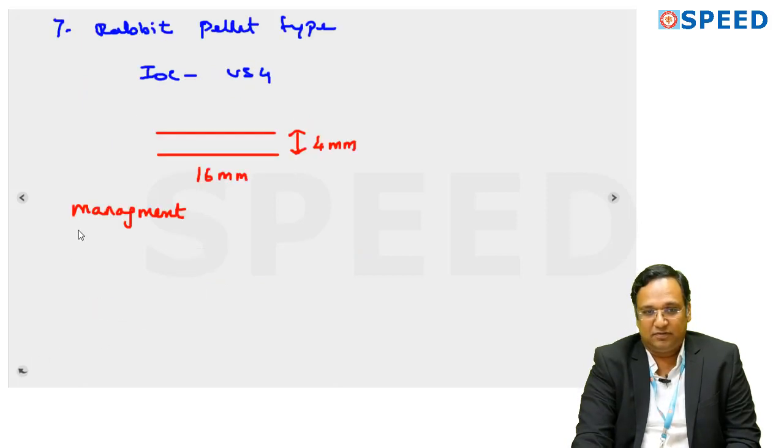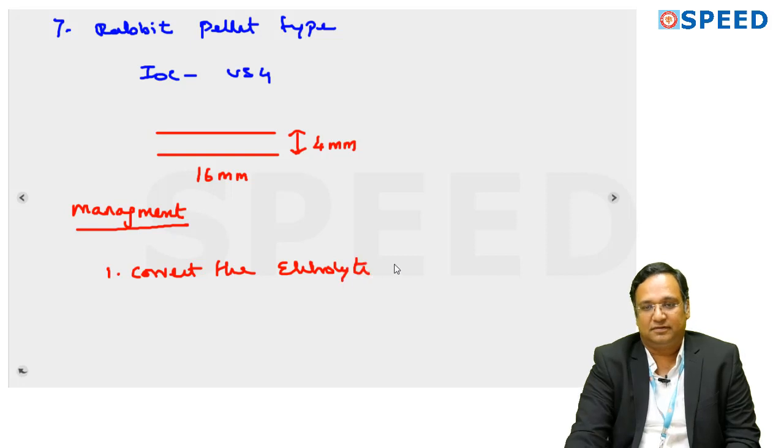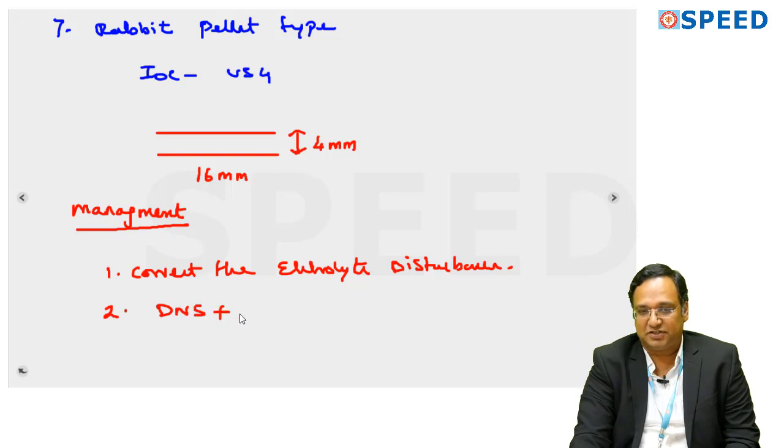The management: number one, to correct the electrolyte disturbance. Number two, you can give dextrose normal saline with potassium chloride in infusion.